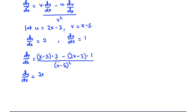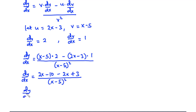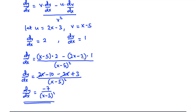Let's simplify: 2 times x is 2x, 2 times negative 5 is negative 10, and negative 1 times 2x is negative 2x, negative 1 times negative 3 is positive 3. So 2x and negative 2x cancel, leaving negative 10 plus 3, which is negative 7. Therefore dy/dx equals negative 7 divided by (x minus 5) squared. This is how to use the quotient rule whenever you have a function divided by another function where you cannot easily cancel the terms. Now let's solve our second example.